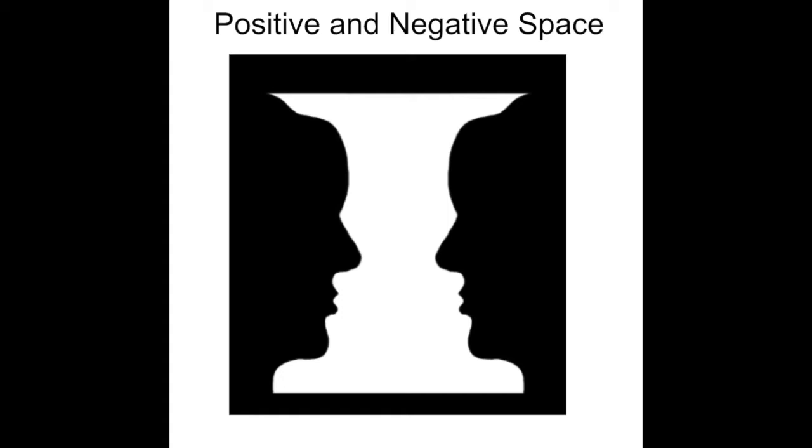But if you're seeing two human heads looking at each other, then you see the black space as the positive space or the solid part, and the white becomes the air between the two faces. So, in this example, the positive space can be either the black or the white.